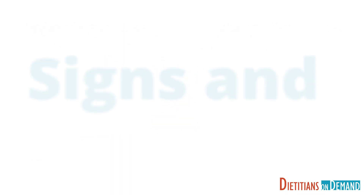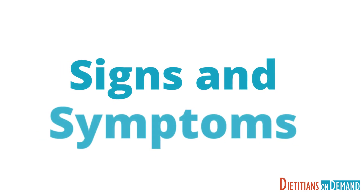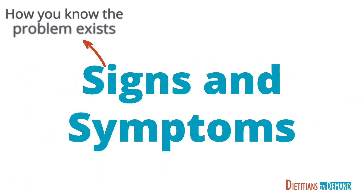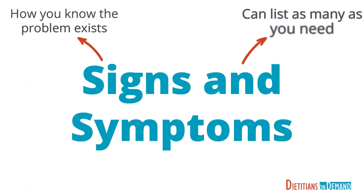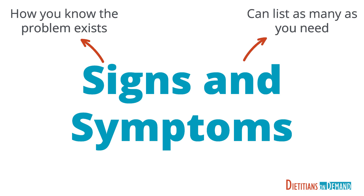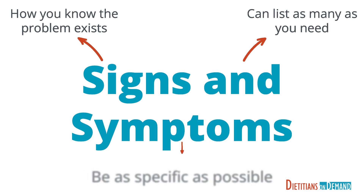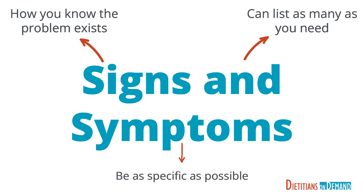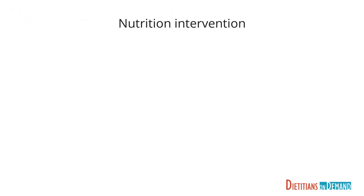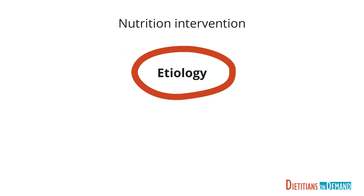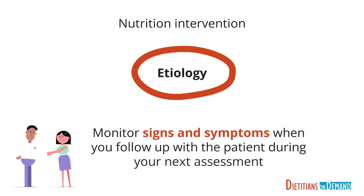And the S stands for signs and symptoms. The signs and symptoms are how you know the problem exists. You can list as many signs and symptoms as you need, but be as specific as possible. When you break down the parts of the PES statement, your nutrition intervention should target the etiology, and the signs and symptoms are what you will follow up with when monitoring the patient during your next assessment.